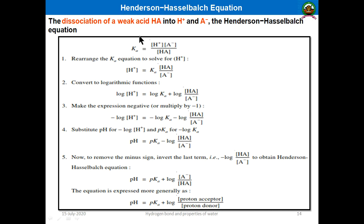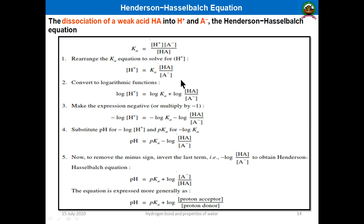Here is the derivation of the Henderson-Hasselbalch equation. For a weak acid HA that dissociates as HA ⇌ H plus + A minus, the dissociation constant Ka equals the concentration of H plus multiplied by the concentration of A minus, divided by the concentration of HA: Ka = [H+][A−] / [HA]. Rearranging to isolate H plus: H plus = Ka × [HA] / [A minus].